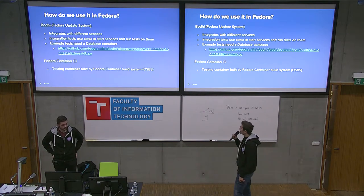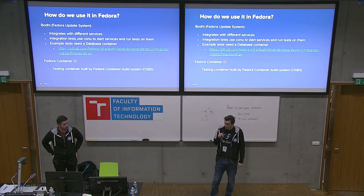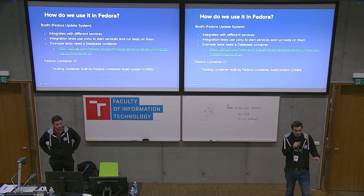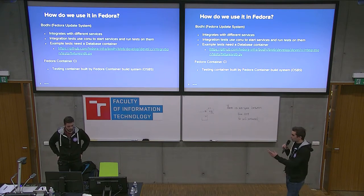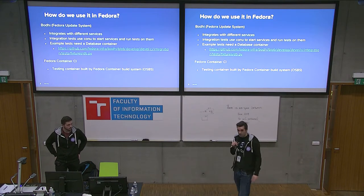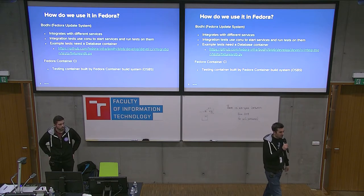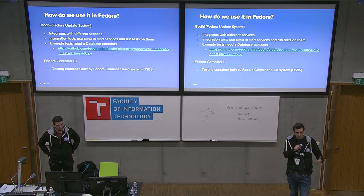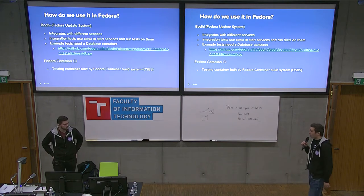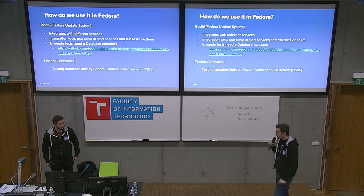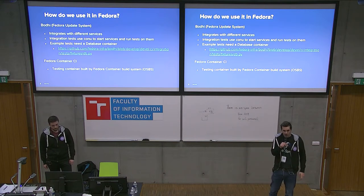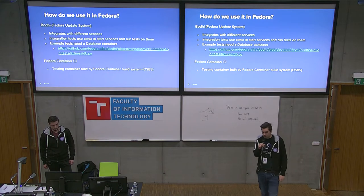We are also building a CI pipeline for our containers. In Fedora we build the Fedora base image and other services like PostgreSQL, MariaDB, and Source-to-Image images. We want to run CI on those containers the same way we run CI on RPM packages — releasing containers based on test results. We use the same framework as the RPM package CI, but use KONU for black-box testing: we start the image and run a few tests to check if the container is behaving correctly.